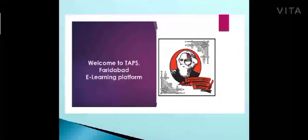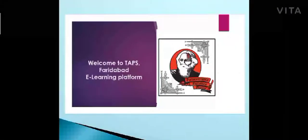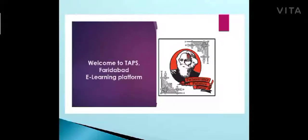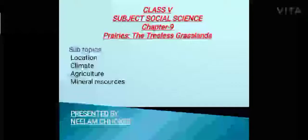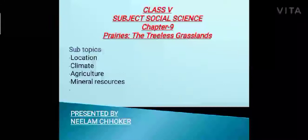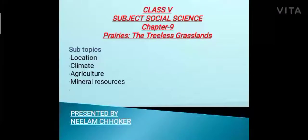Hello friends, let us start with the subject SST for chapter number 9 — Prairies, the treeless grasslands — with the subtopics: location, climate, agriculture, and mineral resources.